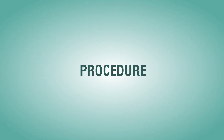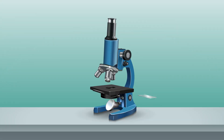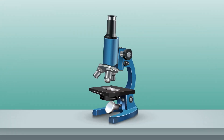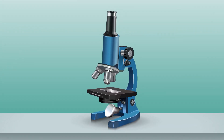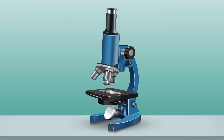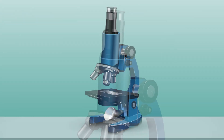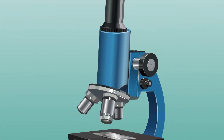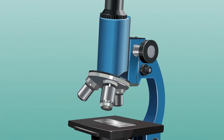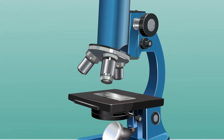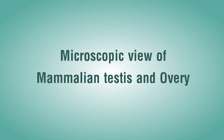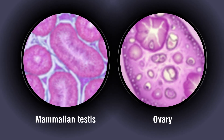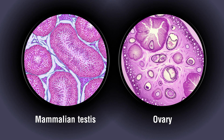Procedure: Place the permanent slide on the stage of the compound microscope and observe the slide first under lower magnification. Observe various stages of gamete development through the lens of the compound microscope. This is the microscopic view of mammalian testes and ovary.